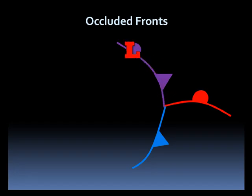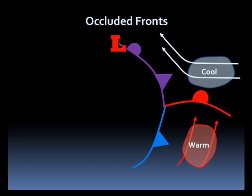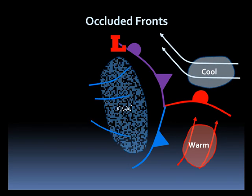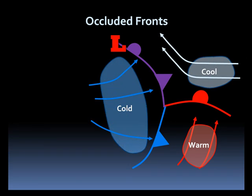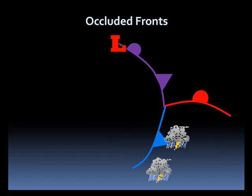The boundary forms the occlusion, represented by the purple line with cusps and barbs pointing in the direction of movement. The low, meanwhile, rides its occlusion back to the northwest. The cold and warm front act as one would expect, while along the occlusion, widespread clouds form along with some precipitation.